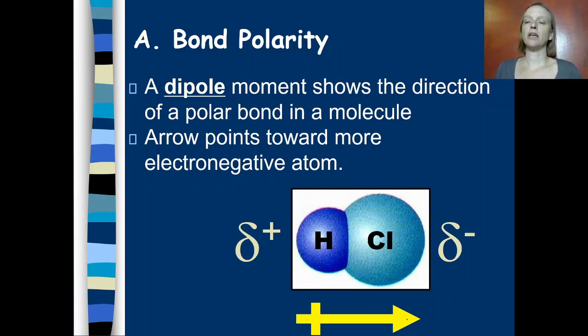So remember, electrons are negative. And look at this end of the arrow. We make a cross, making it look like a positive sign. So this is the positive end of the molecule, and we point towards the negative end of the bond. We've also talked before about representing these partial charges with these lowercase greek delta. Partial negative charge, partial positive charge.